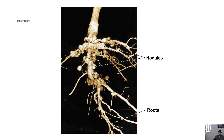These are called root nodules. So rhizobium, when it interacts with a legume, forms nodules — little houses for the rhizobium to live in, essentially. And it fixes nitrogen, making it into a form that the plant can use. Then we can eat the plants and get their protein, and we use it to build our bodies, so on and so forth.